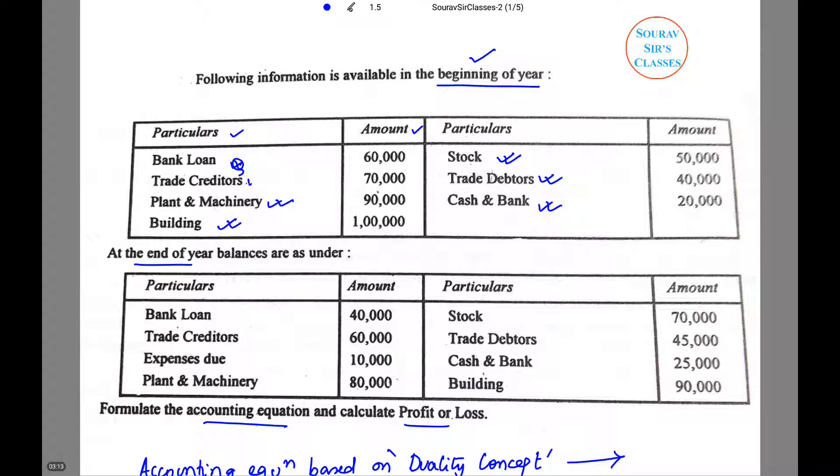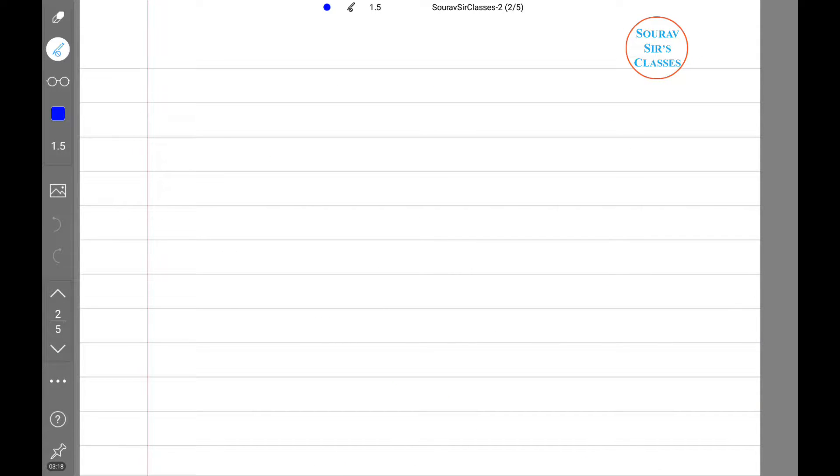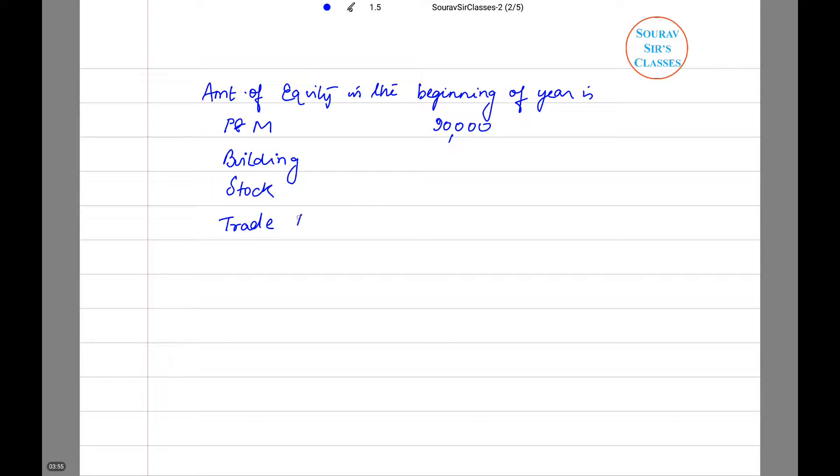And the liabilities are bank loan and trade creditors. So, amount of equity in the beginning of the year: plant and machinery is 90,000. First I'm adding all the assets, then I'll deduct the liability. Building, stock, trade debtors, cash and bank.